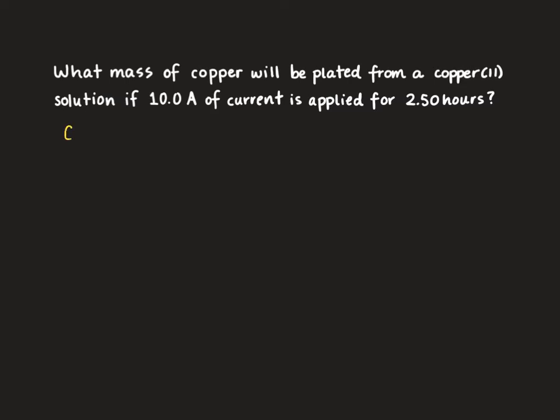So our first step in solving this problem is to write down our half reaction. So copper 2 plus, that's our copper 2 ion, is going to gain two electrons to form solid copper. So that means that we have a two-to-one mole ratio between our electrons and our copper.